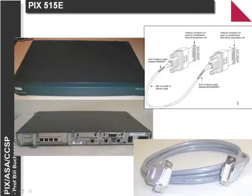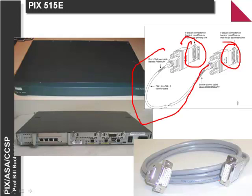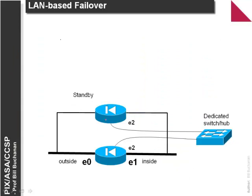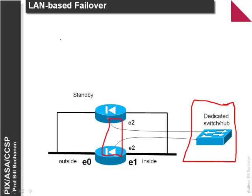Here is an example of the failover cable — it plugs into the failover device and connects via a standard 15-pin D-type connector. With LAN-based failover, we typically don't connect the Ethernet connection directly but go via a dedicated hub or switch. We don't want to mix with other types of switch traffic.